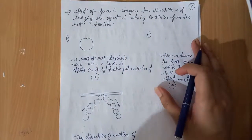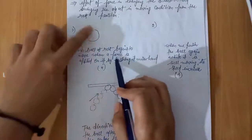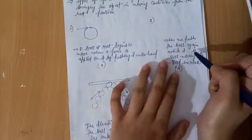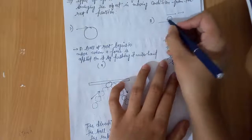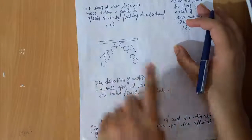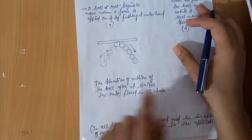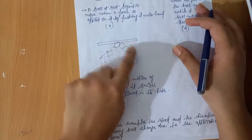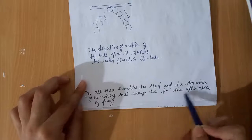Effect of force in changing the direction and bringing an object in moving condition from the rest position: a ball at rest begins to move when a force is applied on it by pushing it with the hand. When we push the ball again while it is still moving in the same direction, the speed of the ball will be increased. The direction of motion of the ball after it strikes the ruler placed in its path will be changed, because a force is exerted on the ball by the ruler due to which its direction of motion gets changed. In all these examples, the speed and direction of the moving ball change due to the application of force.